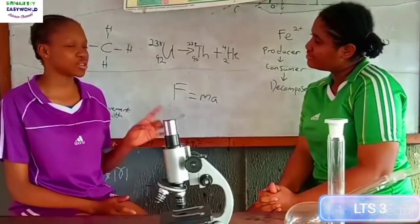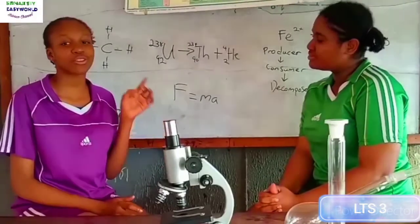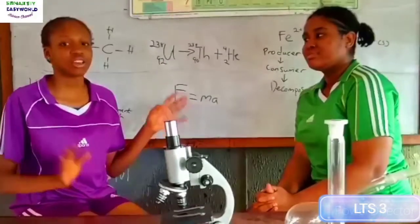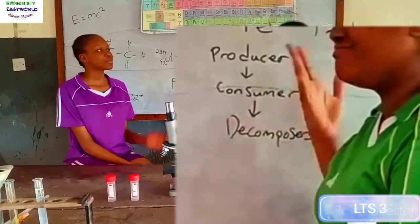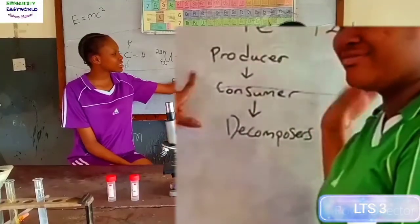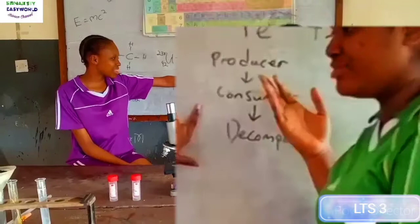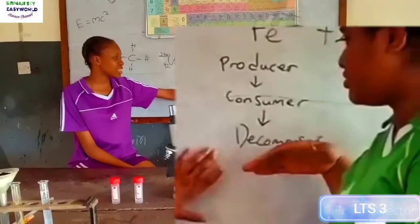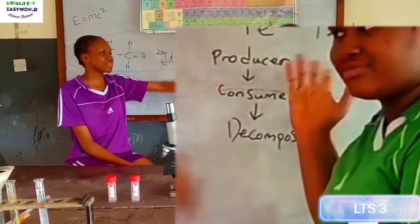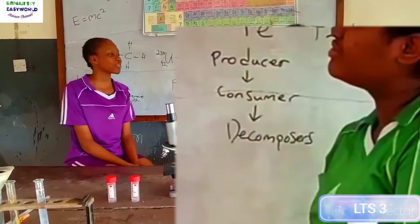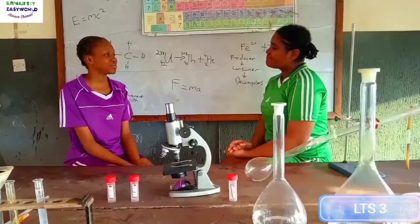What you've actually just explained is correct. It's called the flow of energy in an ecosystem — from producers to consumers to decomposers and back to producers again. So you're not wrong, actually.